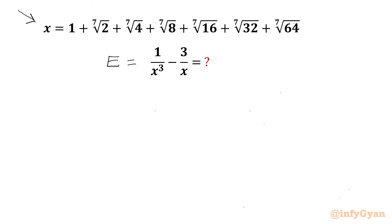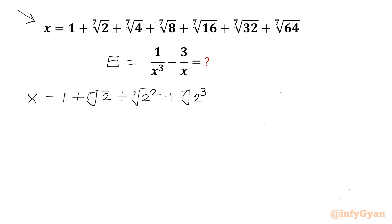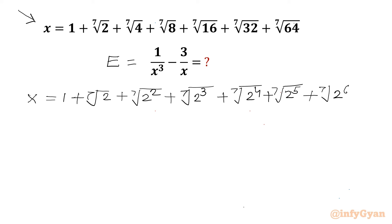Let's get started by considering x as 1 plus the 7th root of 2, plus the 7th root of 4 (which is 2 squared), plus the 7th root of 8 (which is 2 cubed), plus the 7th root of 16 (which is 2 to the power 4), plus the 7th root of 32 (2 to the power 5), plus the 7th root of 64 (2 to the power 6).